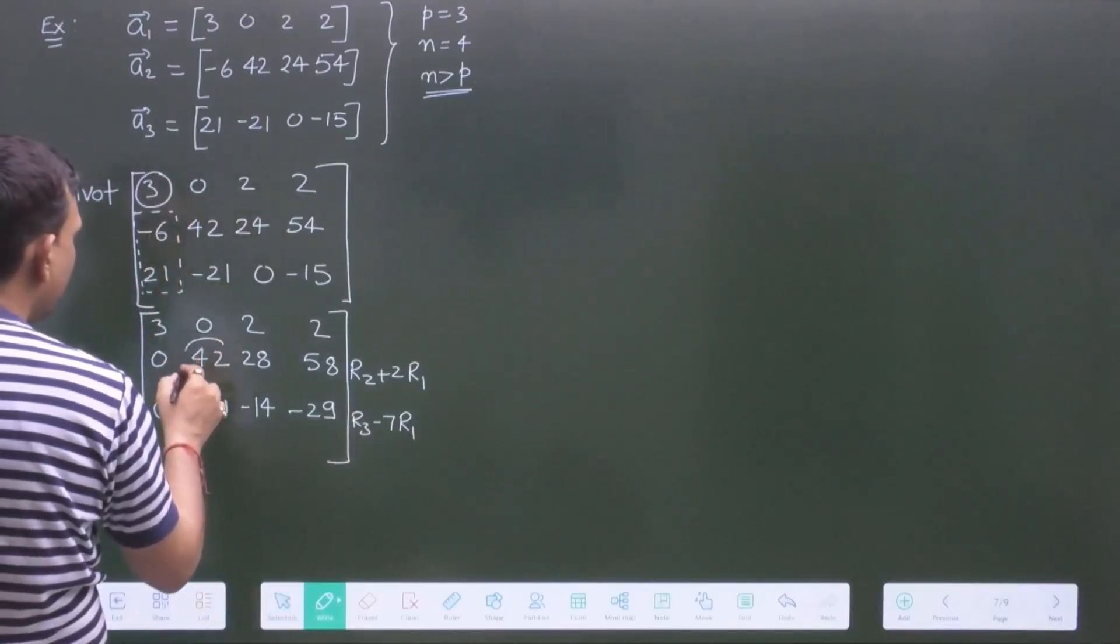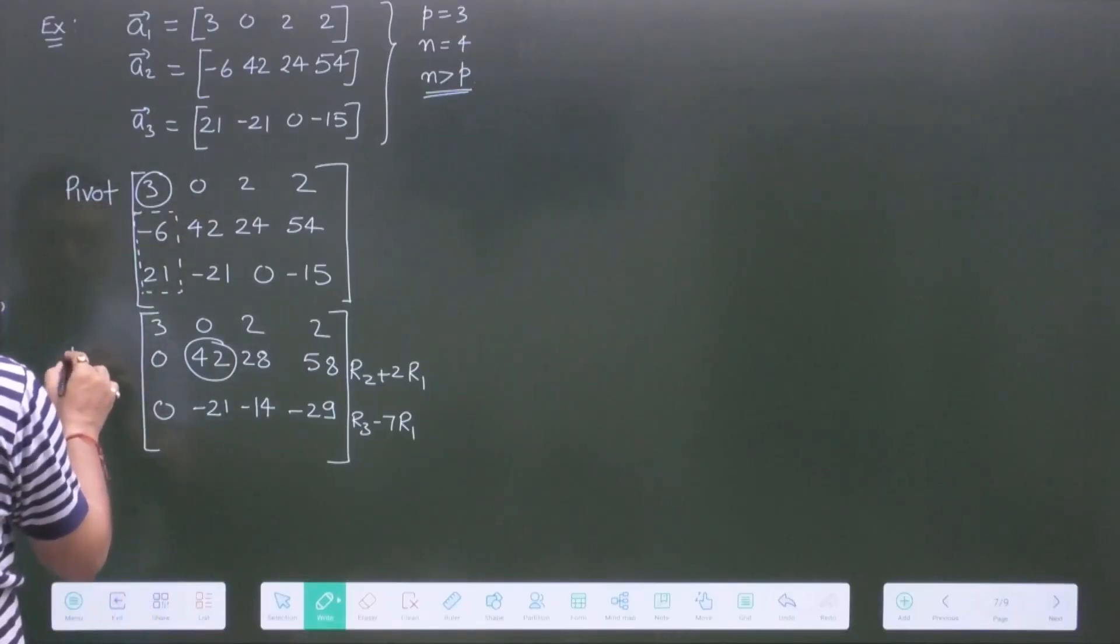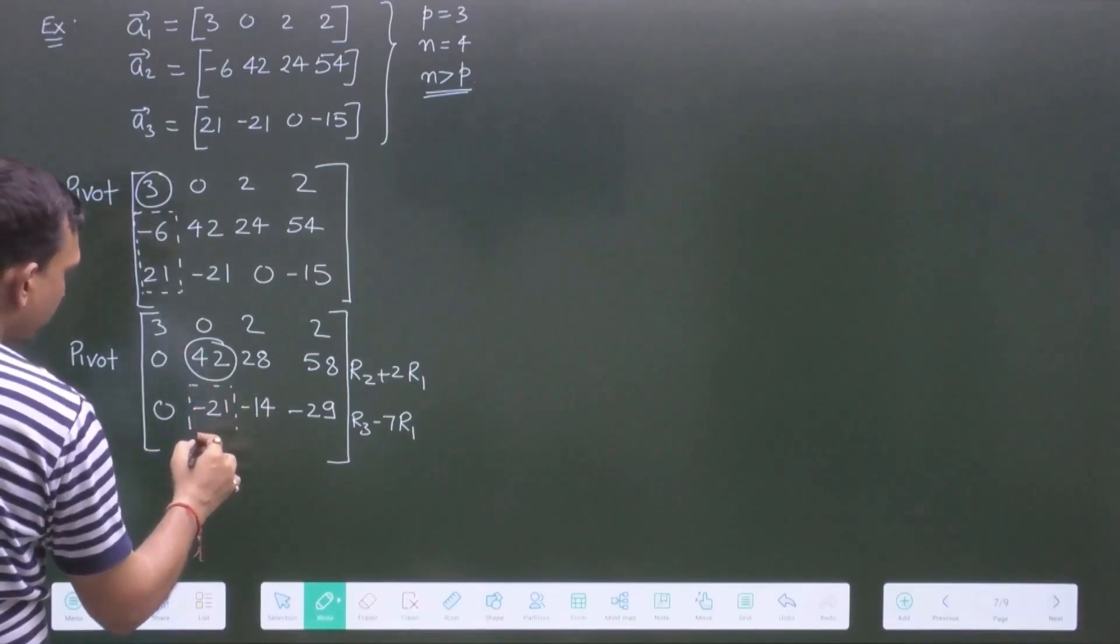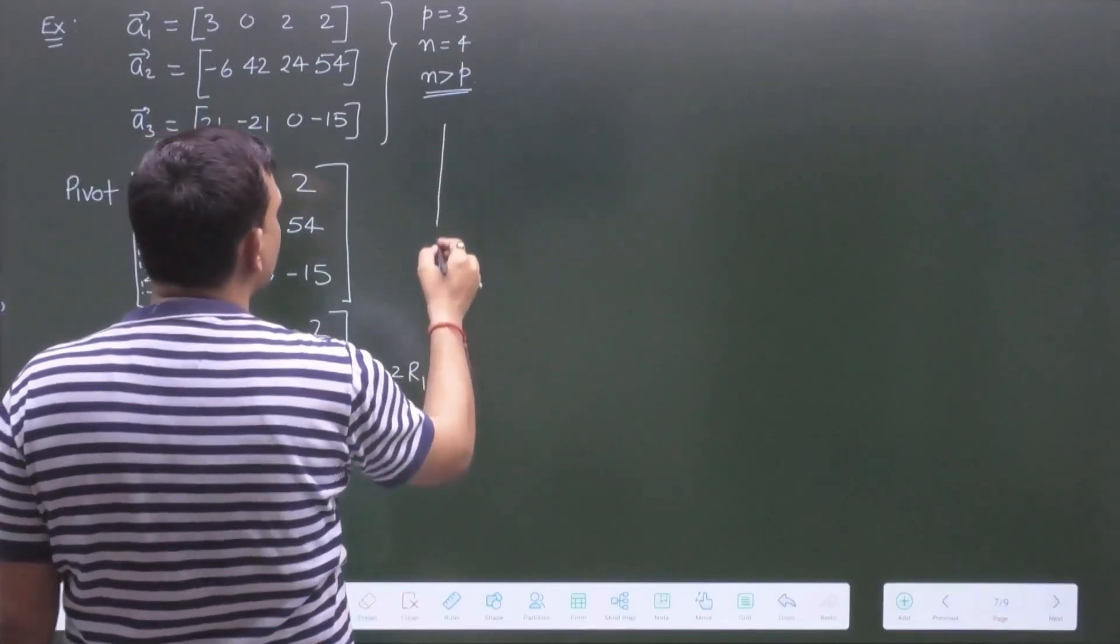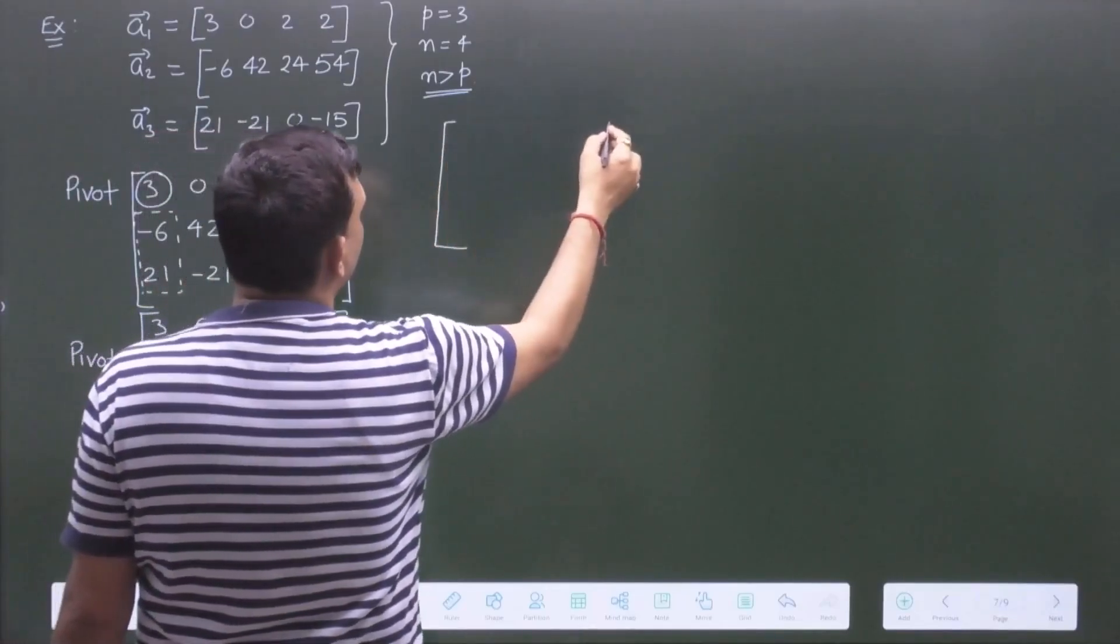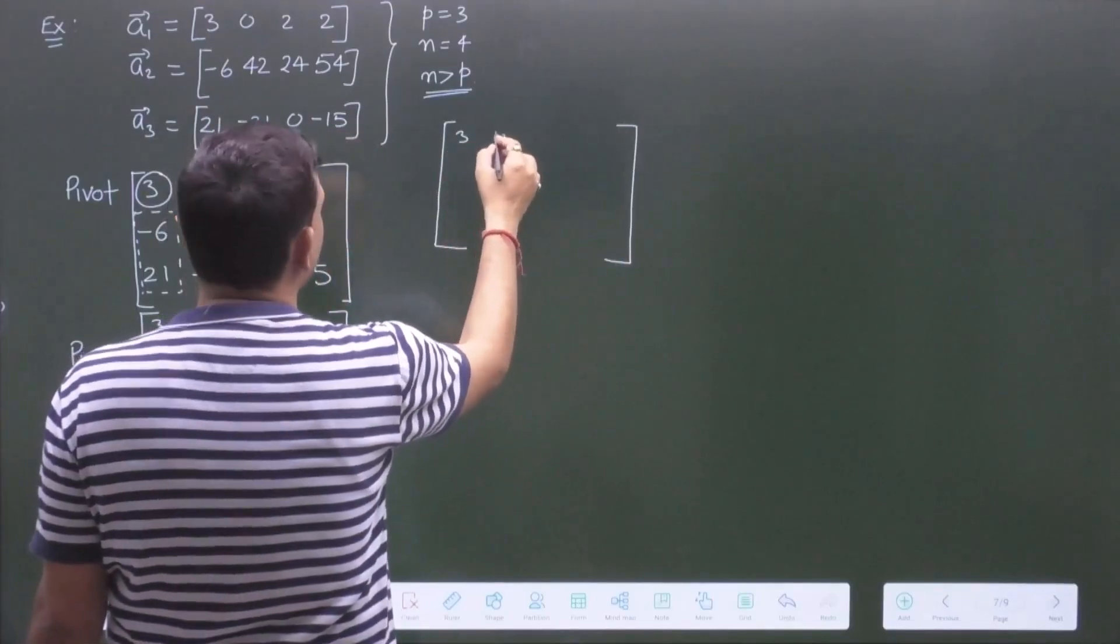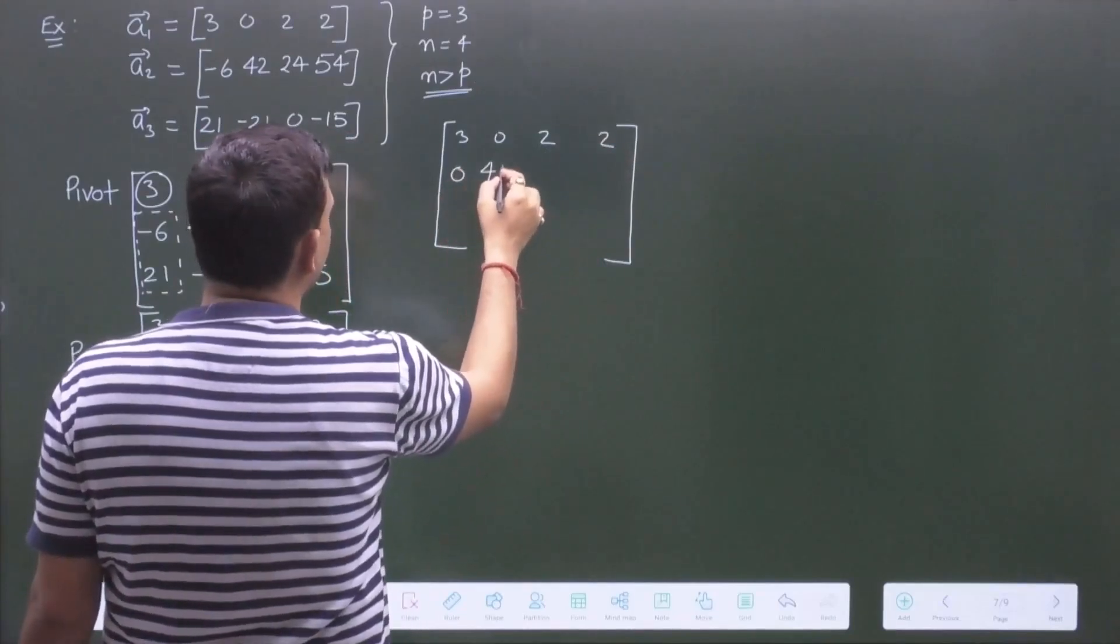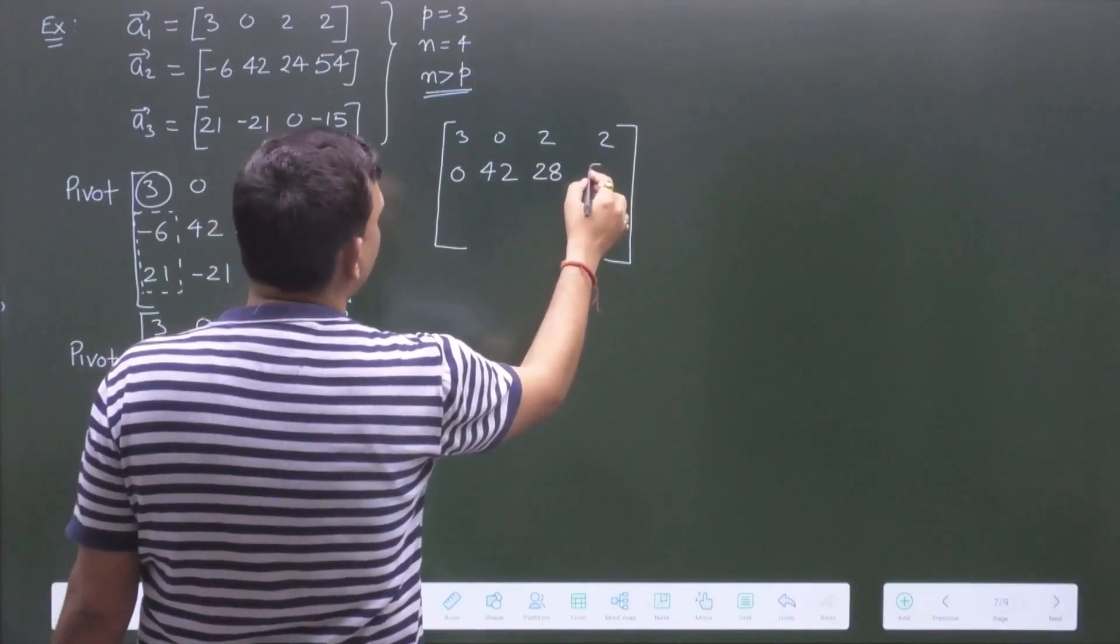Now, this will be the pivot row and pivot element. And now, I want to eliminate this. So, next step will be: this is 3, 0, 2 and 2; 0, 42, 28 and 58.